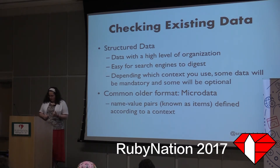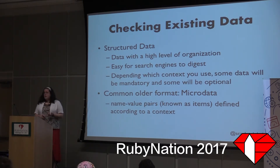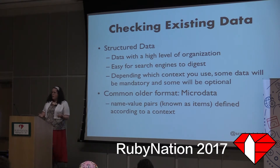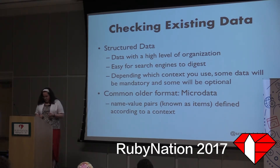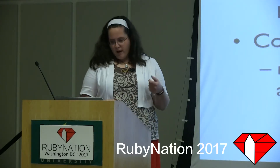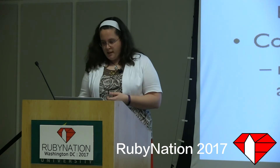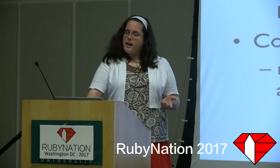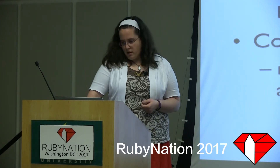The first step for me was to check and see what our existing structures looked like. If someone spent time working on your app's SEO before, you might have existing data, but it might have errors. If your data hasn't been touched in a while — which in tech speak is like two years — you probably have a format called microdata. It consists of name-value pairs, known as items, defined according to a context. The standard and most common context is provided by schema.org.